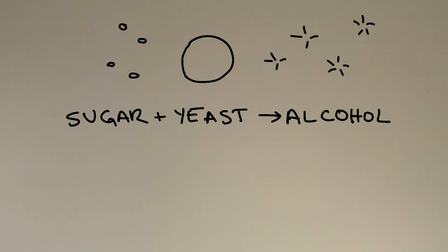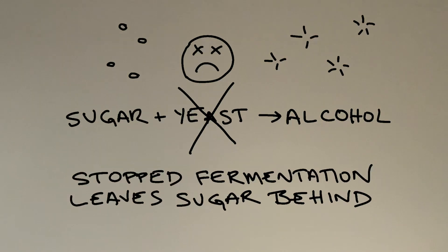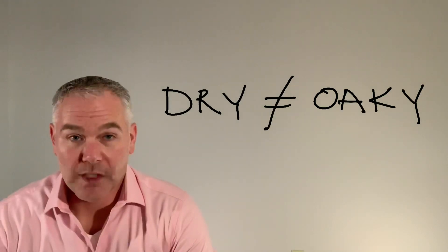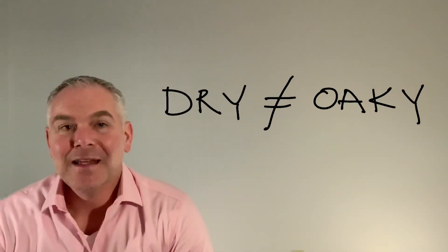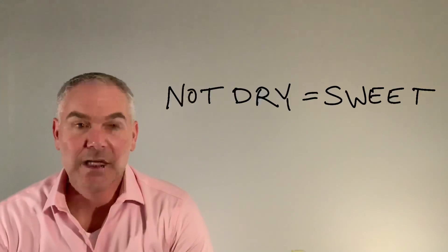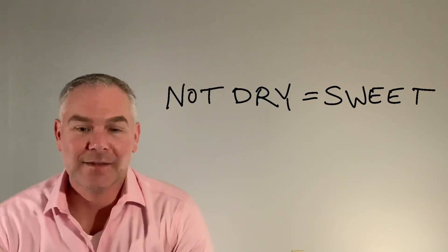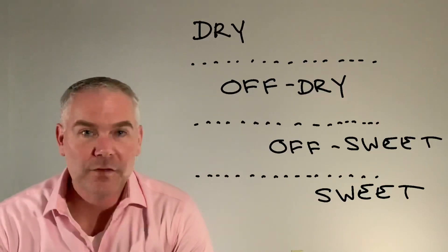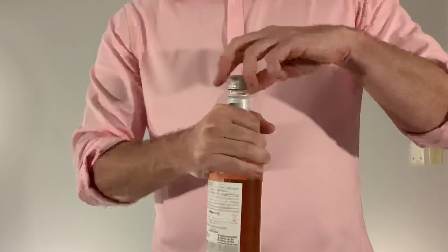If a winemaker does not ferment to dryness, he leaves residual sugar behind and with that, resulting levels of sweetness. Dry does not mean oaky. Dry is not the opposite of fruity. The absolute opposite of dry is sweet, and everything in between is off-dry or off-sweet.